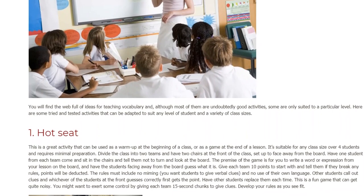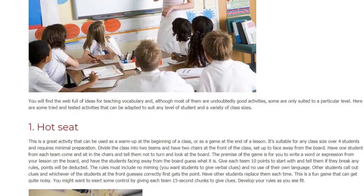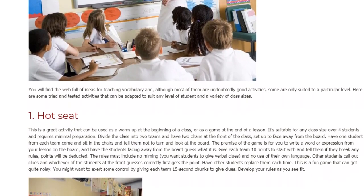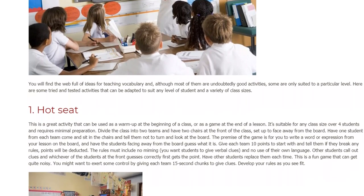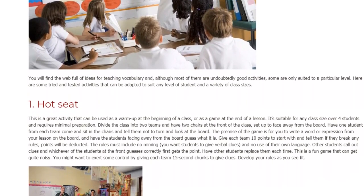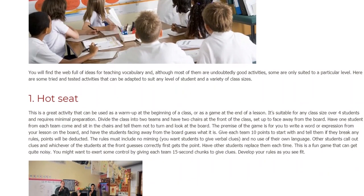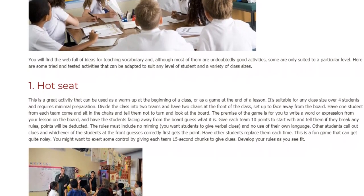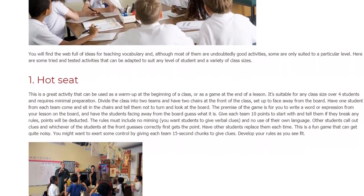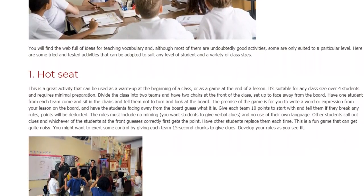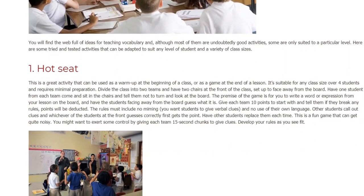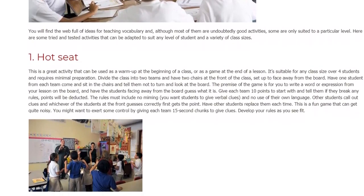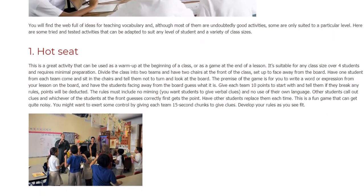The premise of the game is for you to write a word or expression from your lesson on the board, and have the students facing away from the board guess what it is. Give each team 10 points to start with and tell them if they break any rules, points will be deducted. The rules must include no miming — you want students to give verbal clues — and no use of their own language. Other students call out clues and whichever of the students at the front guesses correctly first gets the point. Have other students replace them each time. You might want to exert some control by giving each team 15-second chunks to give clues. Develop your rules as you see fit.